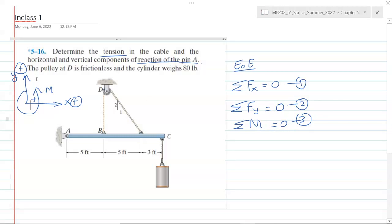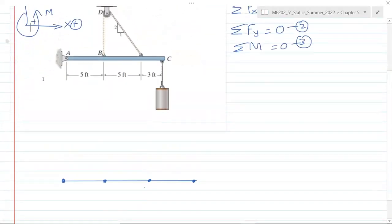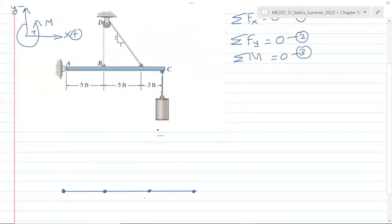Step number one, we defined the coordinate system. Step number two, let's simplify this diagram and draw a free body diagram. These are the four points: A, B, this bracket here, and C. At A we have a pin, and the pin has two support reactions, Ax and Ay.